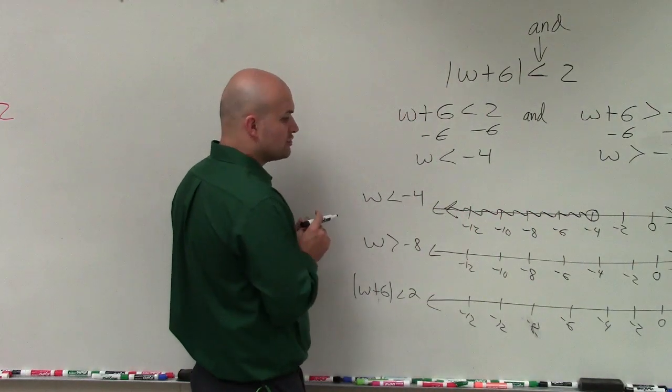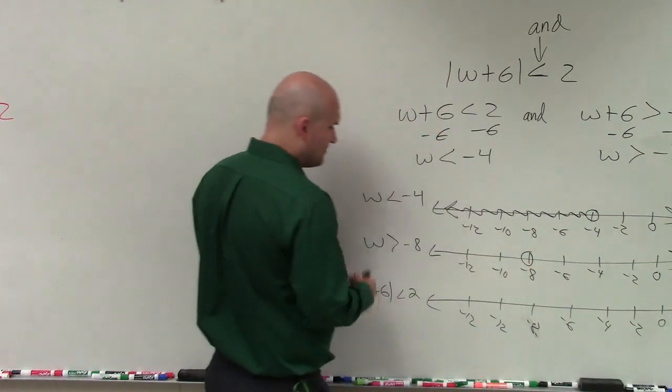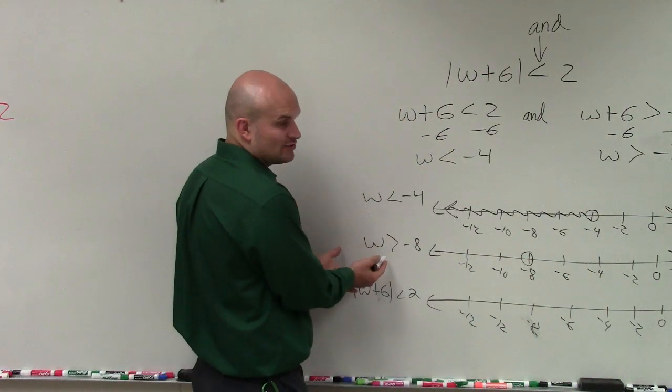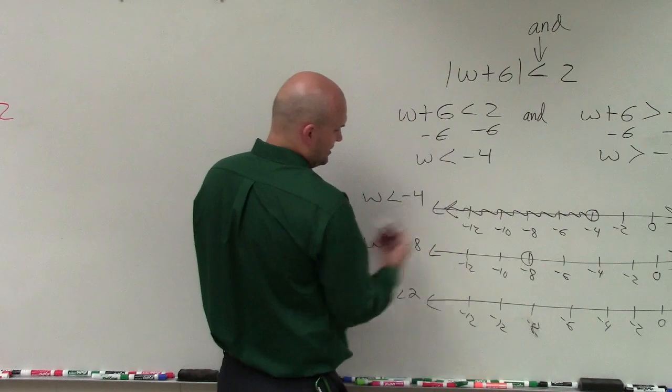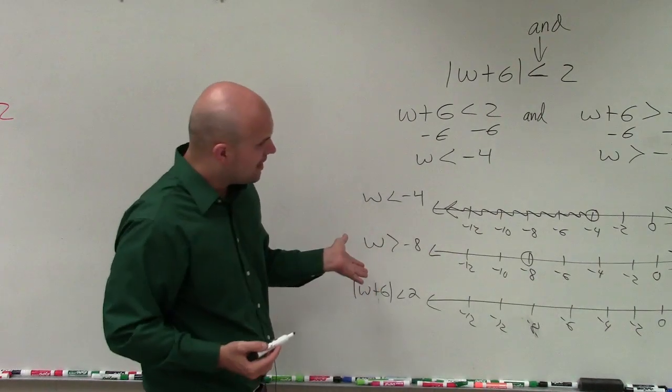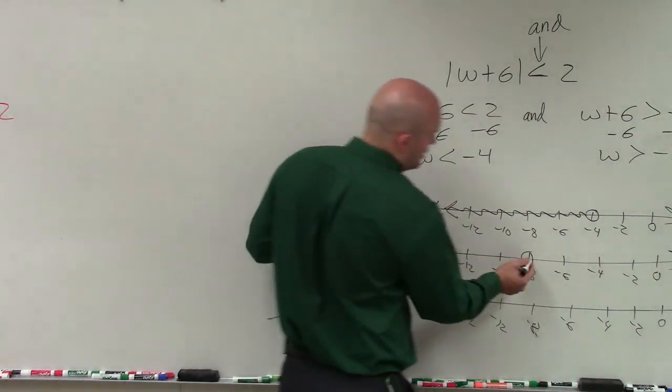Here, I have w is greater than negative 8. So I put a point at negative 8. And then again, it's greater than not greater than or equal to, so it's going to be left open. Then all the values that are greater than negative 8 are going to be to the right.